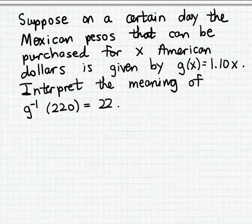In this example, we're going to practice interpreting inverse function notation. Suppose that on a certain day, the number of Mexican pesos that can be purchased for x American dollars is given by this function g.